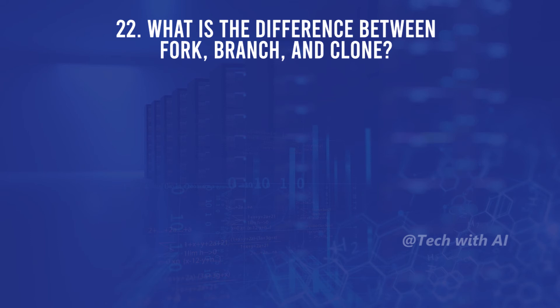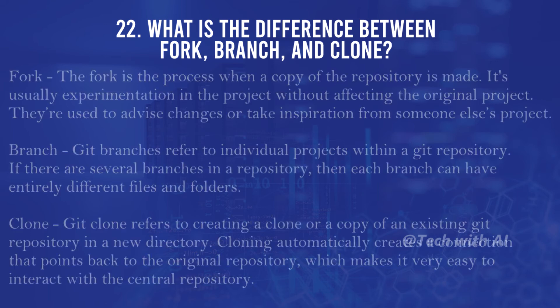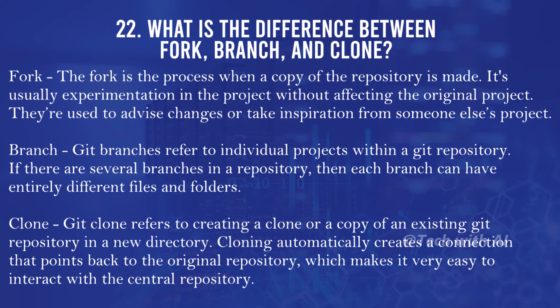What is the difference between fork, branch, and clone? Fork: a fork is when a copy of a repository is made, usually for experimentation without affecting the original project; forks are used to suggest changes or take inspiration from someone else's project. Branch: Git branches refer to individual projects within a Git repository; each branch can have entirely different files and folders. Clone: git clone refers to creating a copy of an existing Git repository in a new directory; cloning automatically creates a connection pointing back to the original repository.